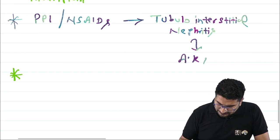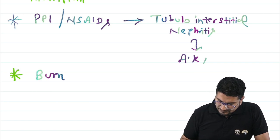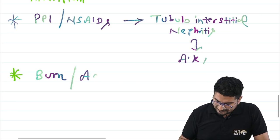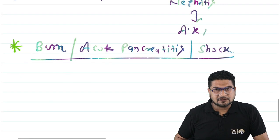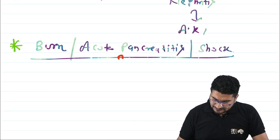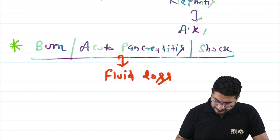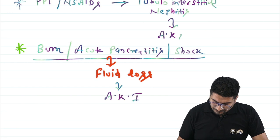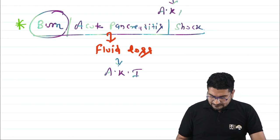Patients with burns, acute pancreatitis, shock, or DKA can develop AKI due to fluid loss leading to hypovolemia.